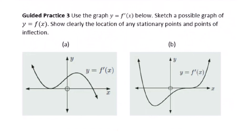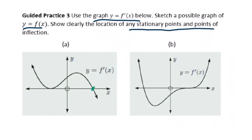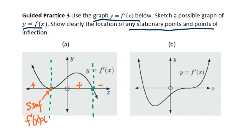Let's go to guided practice three. Use the graph of the first derivative below. Sketch a possible graph of y equals f of x. Show clearly the location of any stationary points and points of inflection. Remember, this is the first derivative graph. Therefore, the x-intercepts will be the minimum points, maximum points, or stationary inflection points. Then we figure out the sign: this is below the x-axis so it's negative, above is positive. Here is a positive. This point is a stationary inflection point because there is no sign change at this point, and the first derivative equals zero.